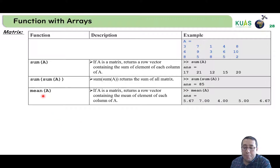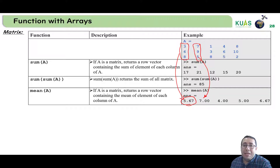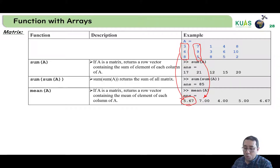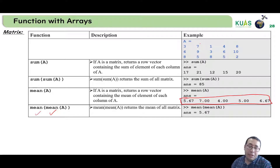Similarly, if we need to estimate the mean of A, mean(A) will estimate the mean for each column and give a vector. So the mean of the column with values 3, 6, 8 should be 5.67, and the mean of another column should give 7. But if we need the mean for the whole matrix, we should write mean(mean(A)), which estimates the mean of all columns and then the mean of those results.